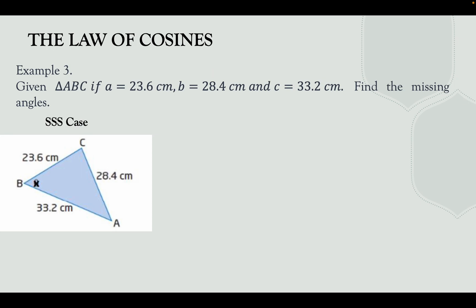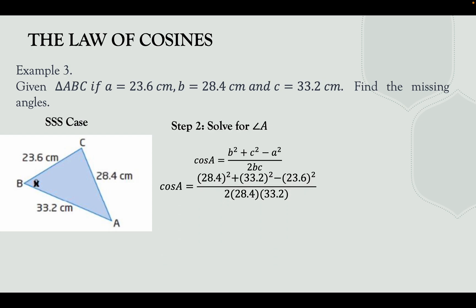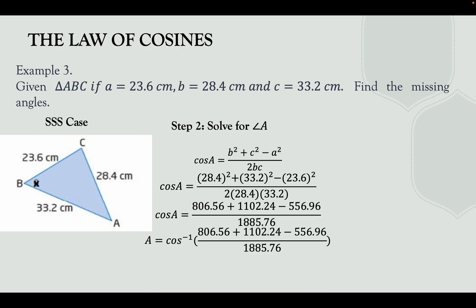Step two: find either of the remaining angles using the Law of Sine or Cosines. We solve for angle A using the Law of Cosines: cos A = (b² + c² − a²) / (2bc). Substituting, simplifying, and applying cos inverse gives angle A = 44.20°. Now we will also try the Law of Sines to compare if the answers are the same.